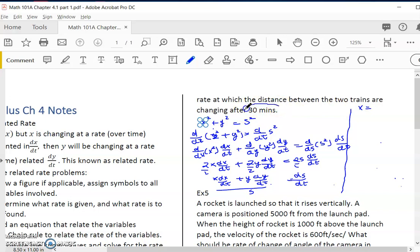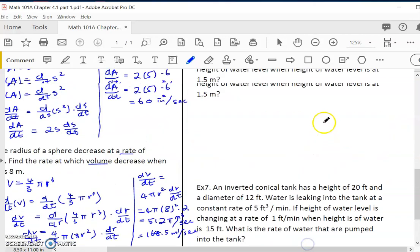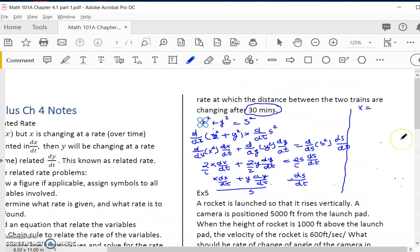We want the rate at a certain time - after 30 minutes. So after 30 minutes, dx/dt is the rate for the one that goes horizontal. This is 65 miles per hour. 30 minutes is half an hour, so x would be 65/2. And we have dx/dt = 65. My y is 40 because that is 80/2. dy/dt, which is just a rate, is 80.